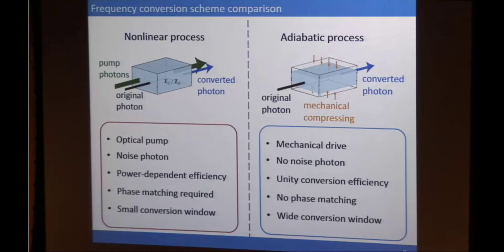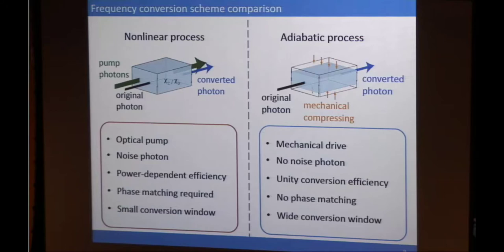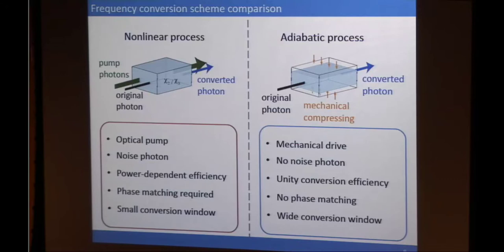That's why we proposed the adiabatic process. Imagine you have a photon in a waveguide or fiber — while the photon is still in the fiber, you very rapidly stretch that fiber. You're physically stretching the fiber, but equivalently you are stretching the photon. By stretching or compressing the photon, you can change its frequency. In this case, a mechanical pump is used instead of an optical pump, so there are no noise photons. This is an adiabatic process, so in principle the conversion efficiency is always 100%. And there is no phase matching condition, so the conversion window is very wide — in principle it works for all wavelengths.